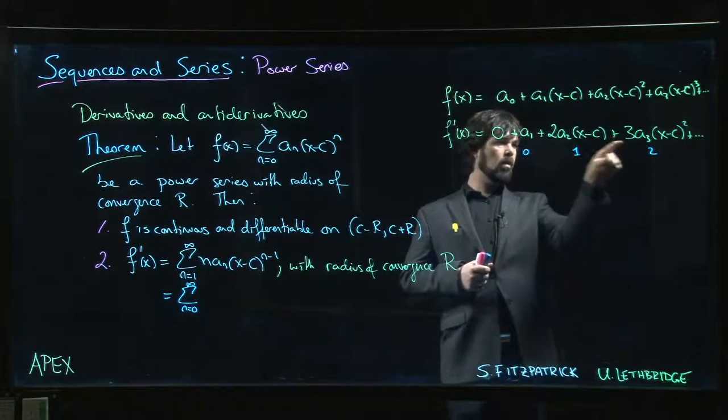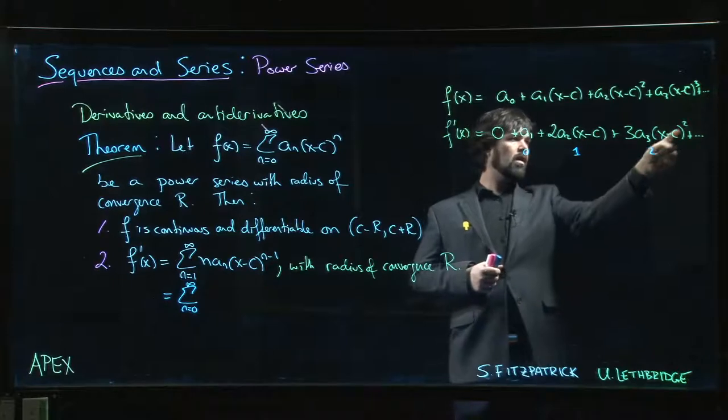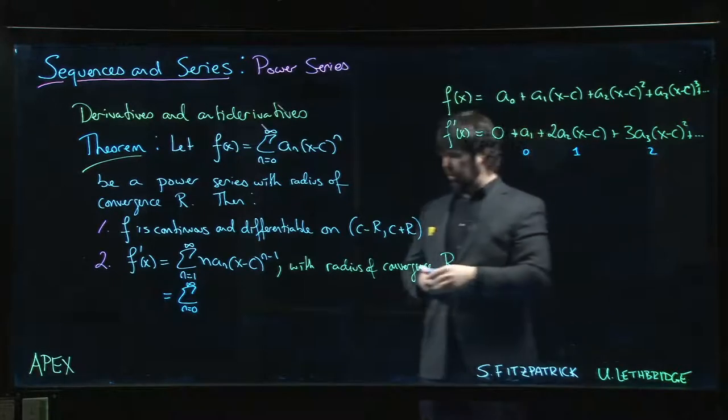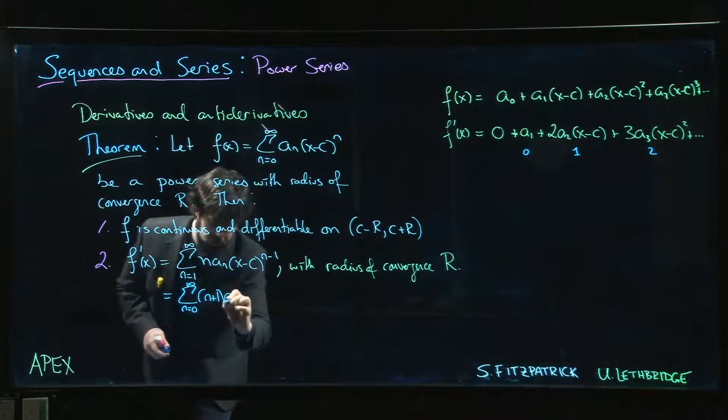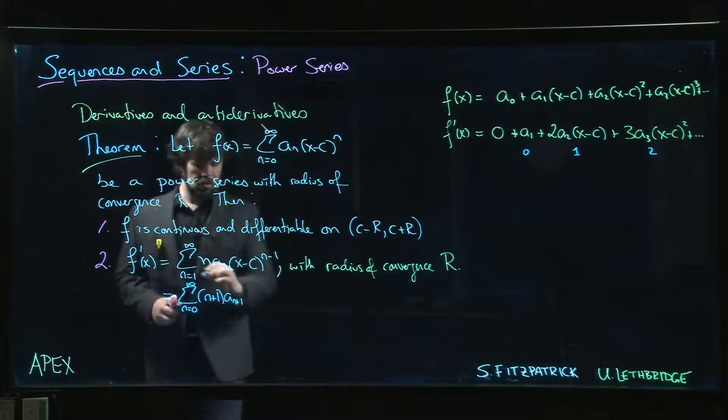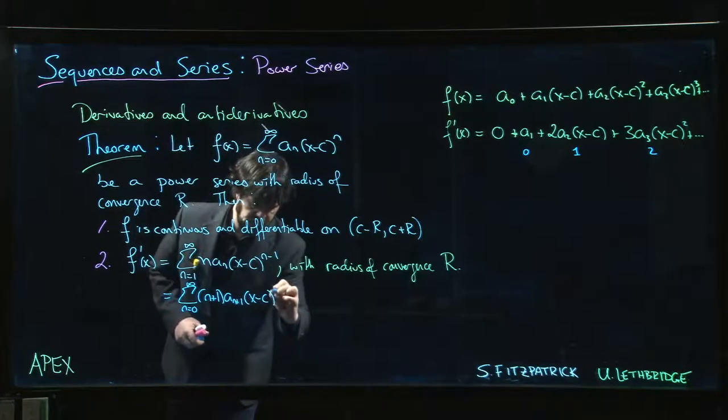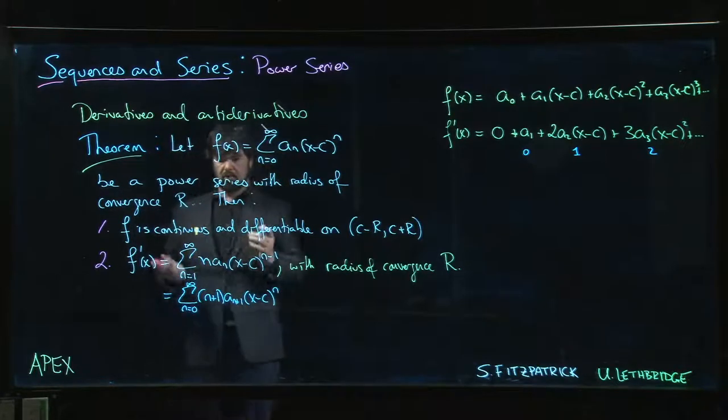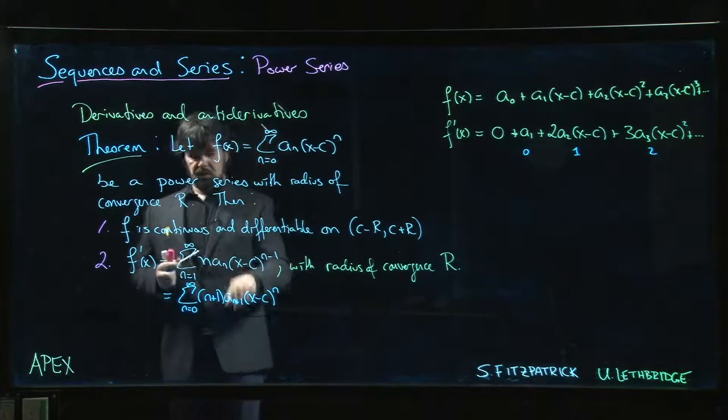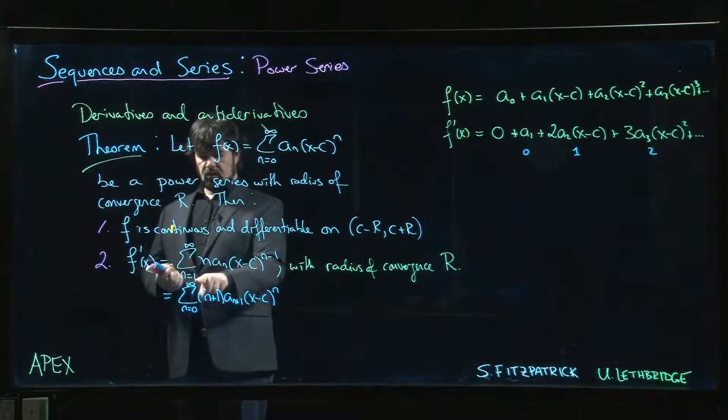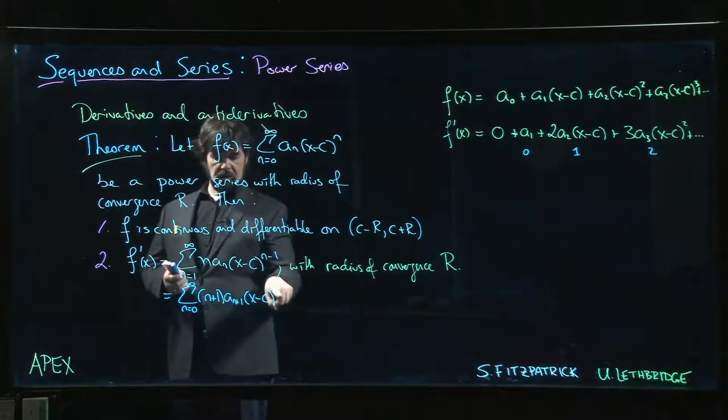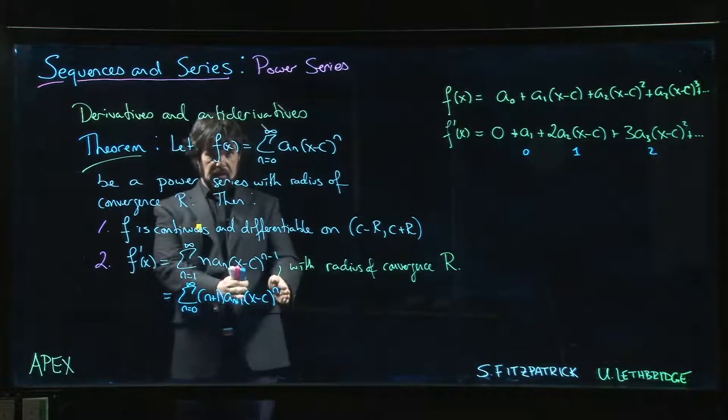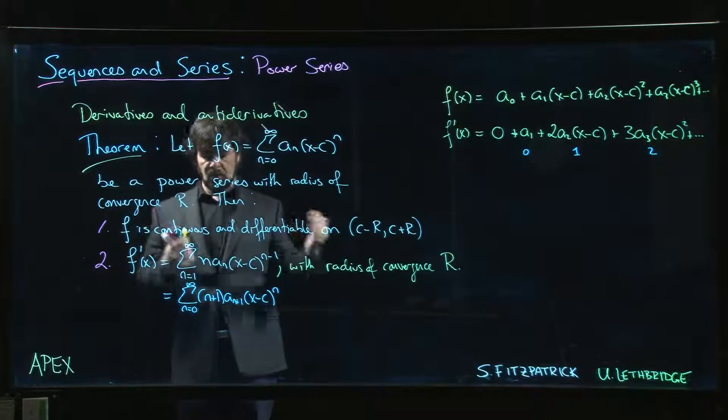So we can actually do this as (n plus 1) times a_(n+1) times (x minus c) to the n. So we could also write it like that, and that's equivalent. Basically the idea is, if you drop the starting point by 1, then you need a corresponding increase in the index within the formula. You drop it here, you increase it there. Things balance out, so you can always do that if you want.